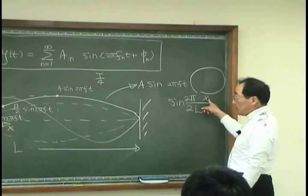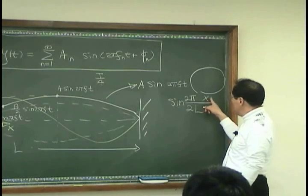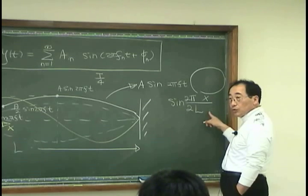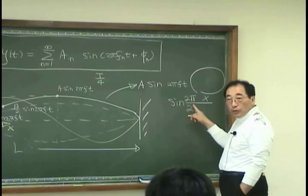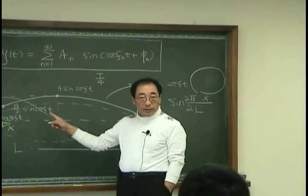So that means when x equals l over 2, I have l over 2 over here, 2 over 4, that is π over 2, so I have this.